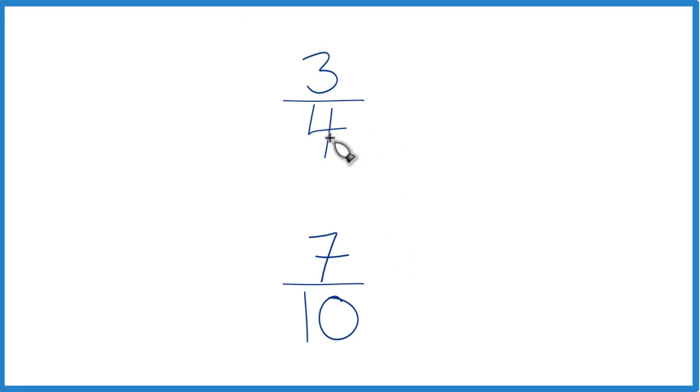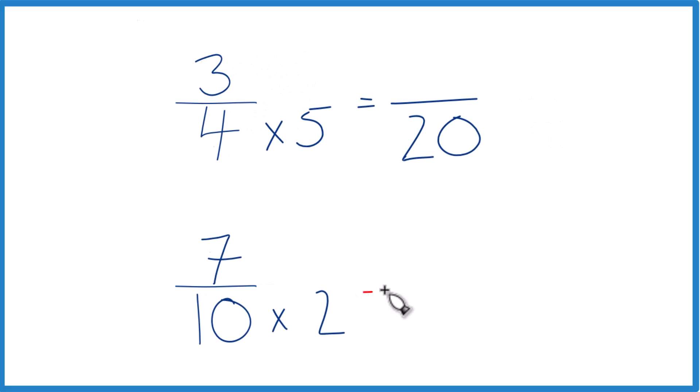Why don't we do this? 4 times 5, that gives us 20. And then 10 times 2, that will give us 20. So we have the same denominator.